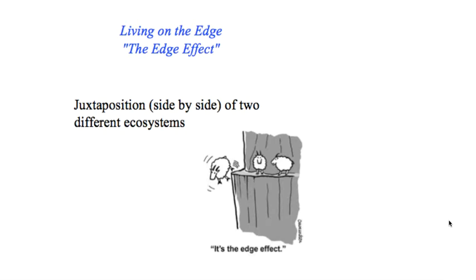So the edge effect is juxtaposition, which means side-by-side of two different ecosystems, and where the two meet is where really interesting biodiversity starts to happen.